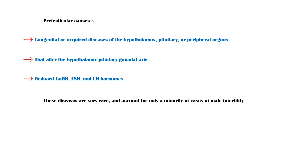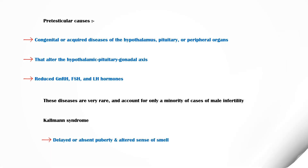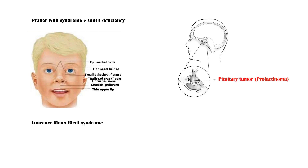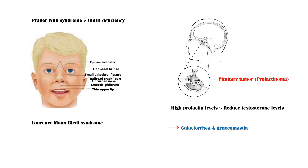Some of these conditions include Kallmann syndrome, which is characterized by delayed or absent puberty and an altered sense of smell. Prader-Willi syndrome, characterized by GNRH deficiency. Laurence-Moon-Biedl syndrome. Pituitary tumors such as prolactinomas, where high prolactin levels reduce the testosterone levels in affected individuals.